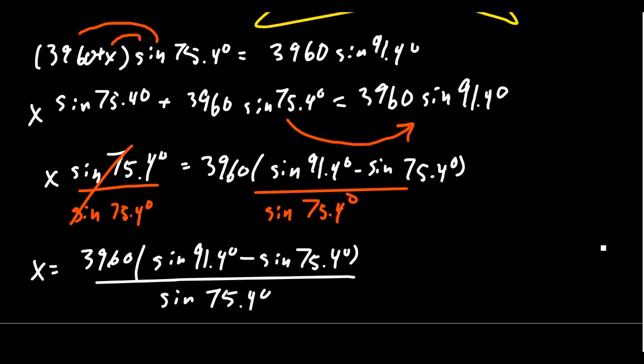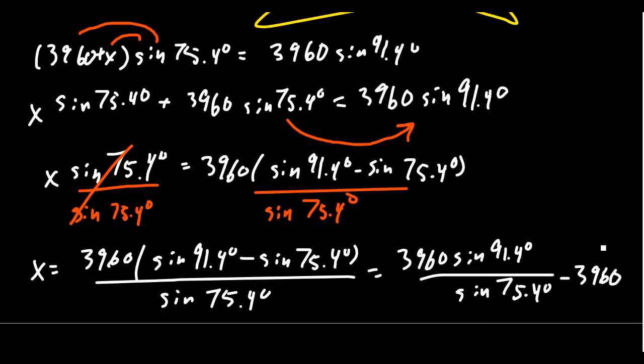If you wanted to do some type of cancellation, you could break up the numerator if it wasn't factored. But you'd still have something that's basically as complicated as you see in front of you. You could end up with 3,960 sine of 91.4 degrees over sine of 75.4 degrees minus 3,960. That's how the fraction would simplify if you wanted to.